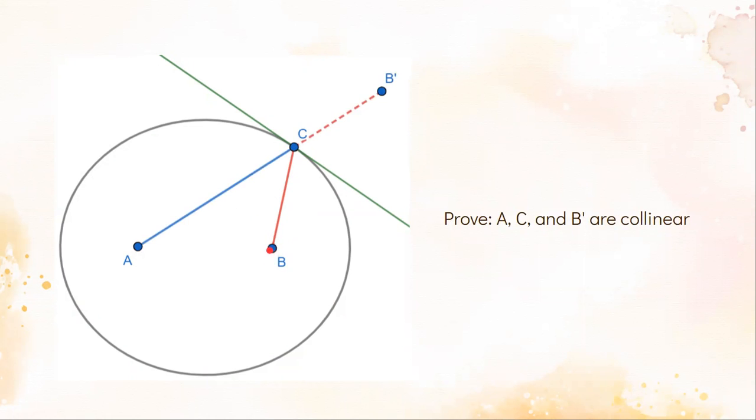Reflecting B over the green line to form B' will make this more clear. The reflected ray will continue in the direction from B' to C. We want to prove that A is on this reflected line, or in other words, A, C, and B' are collinear.